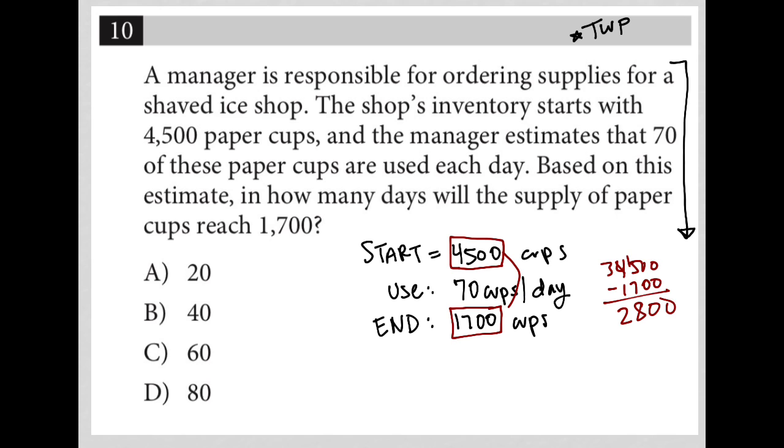So I know that I've decreased, I've used 2,800 cups. So if I'm using those cups at 70 cups per day, then how many days will it take to use 2,800 cups?